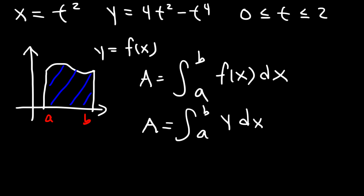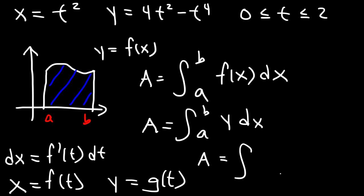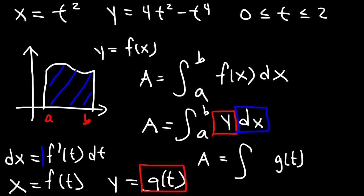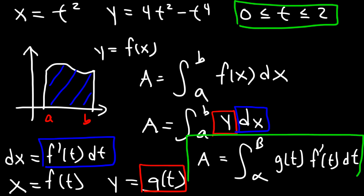Now if x is equal to f of t and y is equal to g of t, we can replace y with g of t. If we differentiate both sides, we get the differential dx equal to f prime of t times dt. Therefore, the area is the integral of g of t times f prime of t dt. The limits of integration change from a and b to alpha and beta, where alpha and beta represent t values. This is the formula we use when finding the area under a curve of a parametric function.